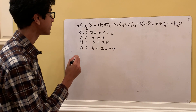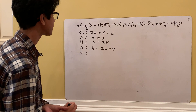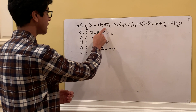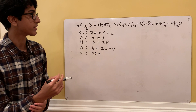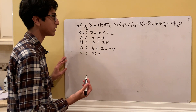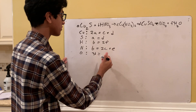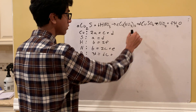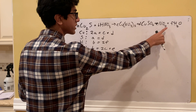Now for oxygen — this is the hardest one because it shows up in many compounds. On the left side we have a subscript of 3 and coefficient B, giving 3B. On the right side: 2 times a subscript of 3 gives 6, multiplied by coefficient C gives 6C; plus 4 times D gives 4D; plus 2E; plus F. So: 3B = 6C + 4D + 2E + F.